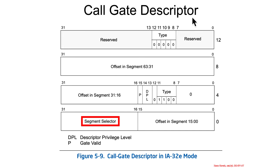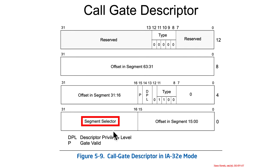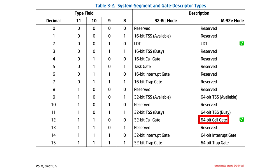We've got a call gate descriptor, and this is one of the 16-byte system segment descriptor types that fit into the GDT or LDT. The interesting thing about the call gate descriptor is that it has a segment selector inside of it and a segment offset that allows for a 64-bit value. So unlike the code and data segment descriptors that have a segment base and segment limit, this instead has something akin to a logical address or a far pointer.